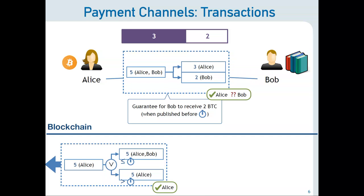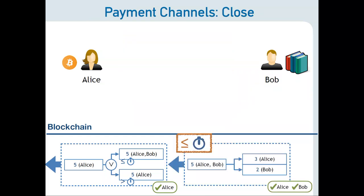We can repeat this process again and again to pay from Alice to Bob off-chain. There will be a moment in which Bob really wants to get the coins into the blockchain, so he takes the last state — the last off-chain transaction — signs it himself, and puts it on the chain. Intuitively, we really need only two transactions on-chain: one to open the channel and one to close it, and we can have many, many payments off-chain that never hit the blockchain. The scalability gain is really huge, because the verification time isn't just small — it's zero. We don't have to verify transactions that never make it to the blockchain.